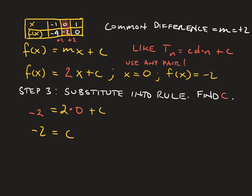I'm now ready to write my final rule. And in order to write the final rule, I'm going to put all of the parts together. So the final rule will be f of x equals 2x minus 2. And that's all there is to it.